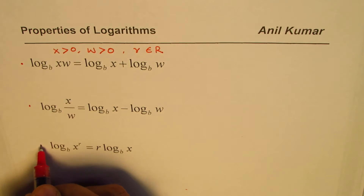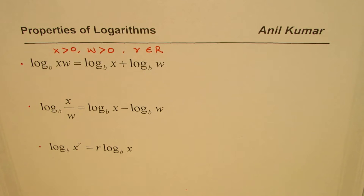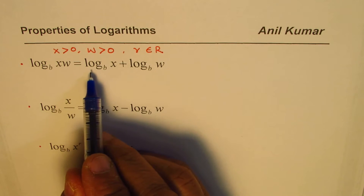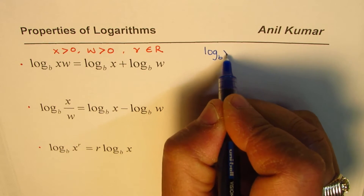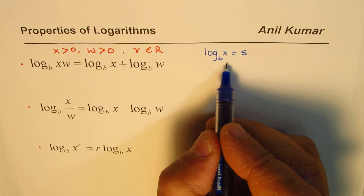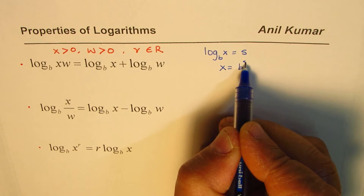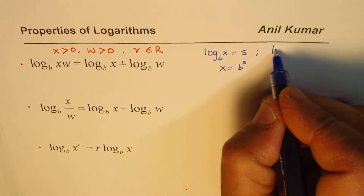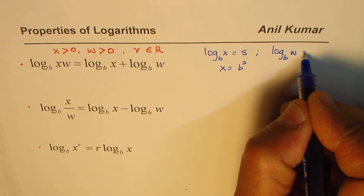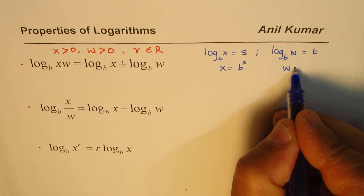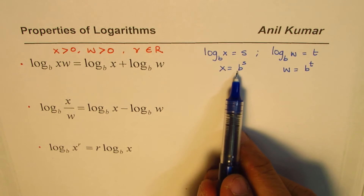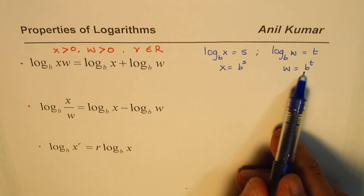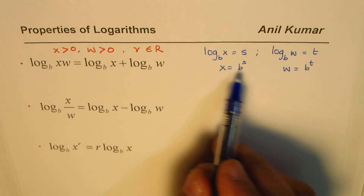We'll look into these properties and I can give you a short proof. The proof works by writing the logarithms in exponential form. For the first one, let log base B of X equal S, so X equals B to the power of S. Similarly, let log base B of W equal T, so W equals B to the power of T. So we have X as B to the power of S and W as B to the power of T.